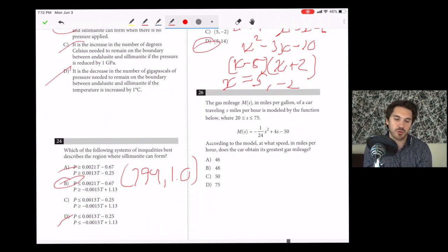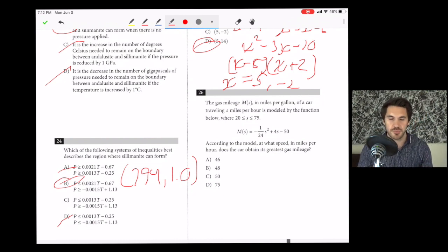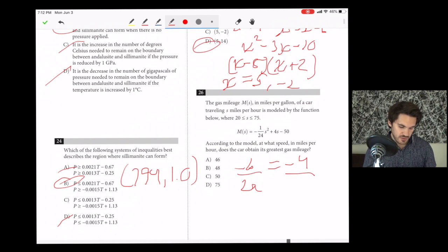Number 26. According to the model, at what speed in miles per hour does the car obtain the greatest gas mileage? This is a quadratic. To find the maximum value, find the vertex. The formula for the x-coordinate of the vertex is negative b over 2a. The b value is 4, so negative 4. The a value is negative 1 over 24. If we calculate this, we get 48.